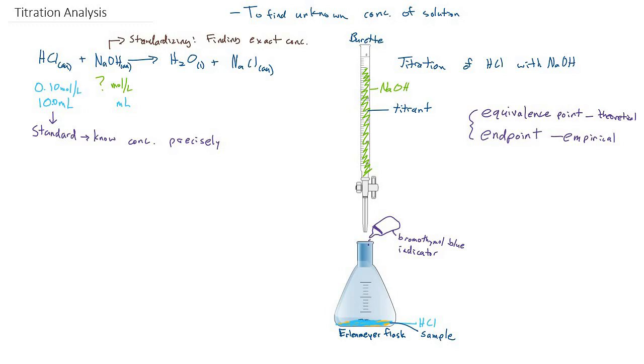We've used up some sodium hydroxide. Let's say the level is now down to here on our burette. It used to be up here. So we know that this amount, the difference between our initial and final volumes on our burette, is the amount of sodium hydroxide used.